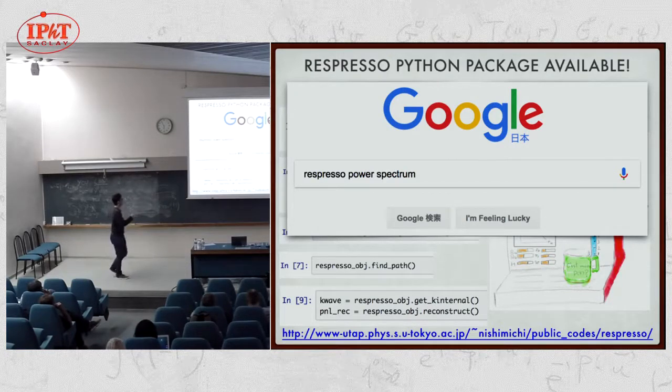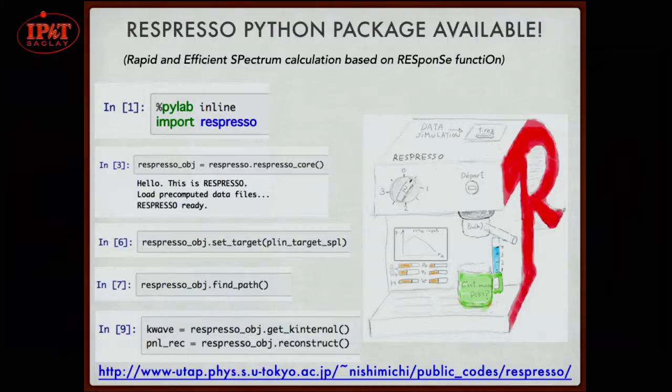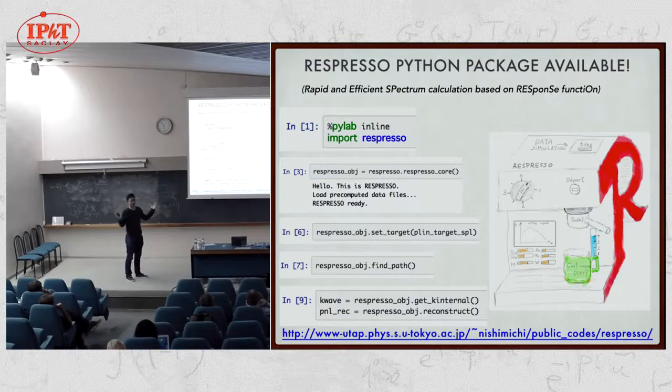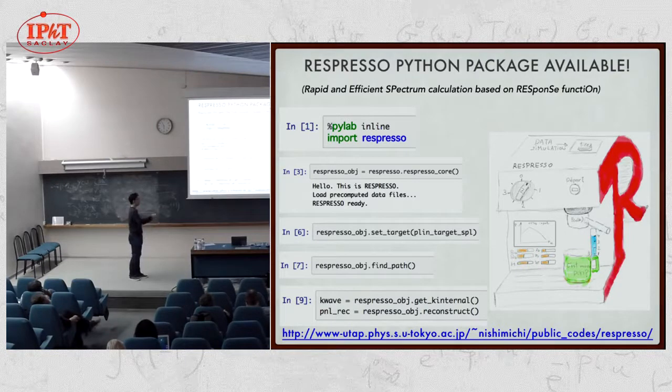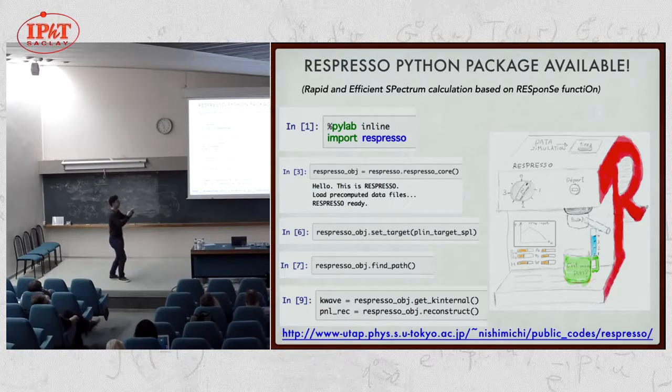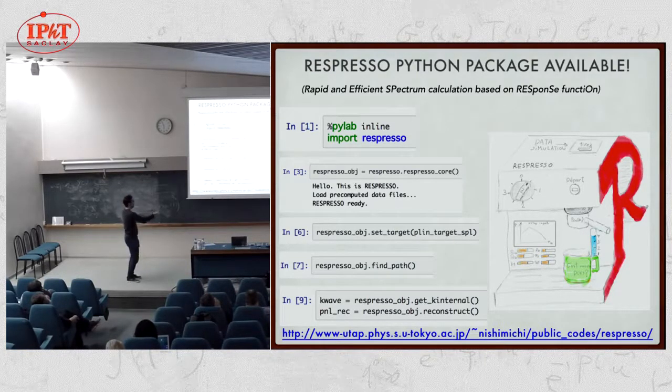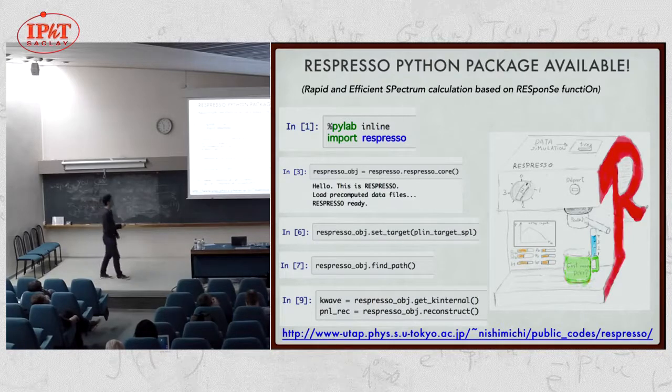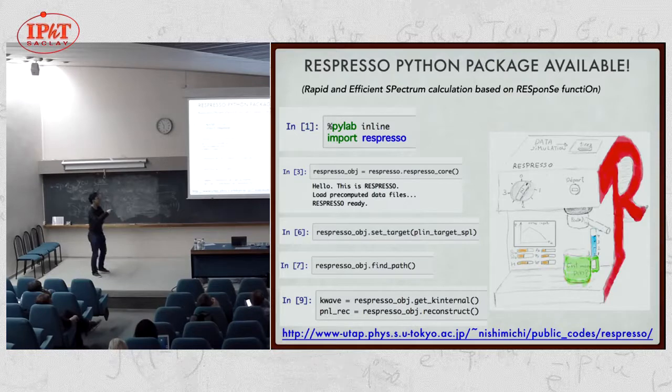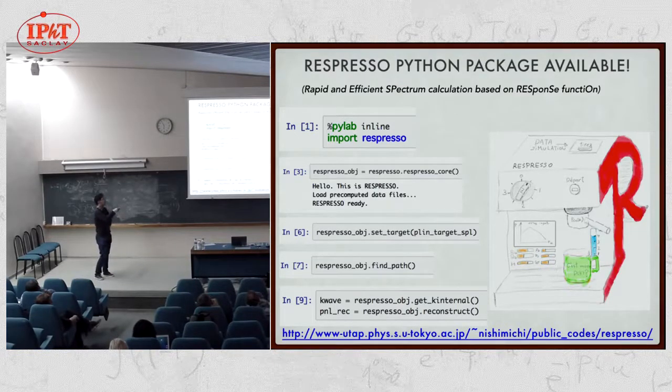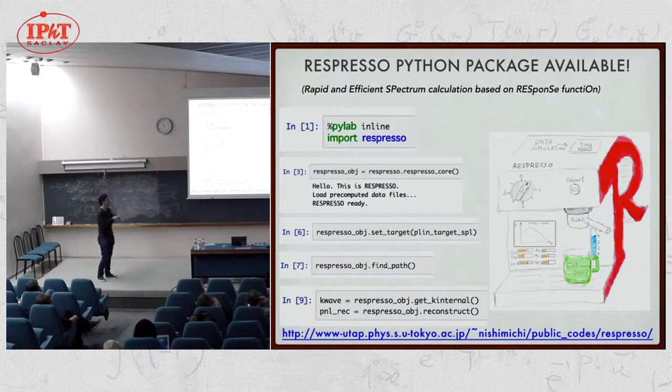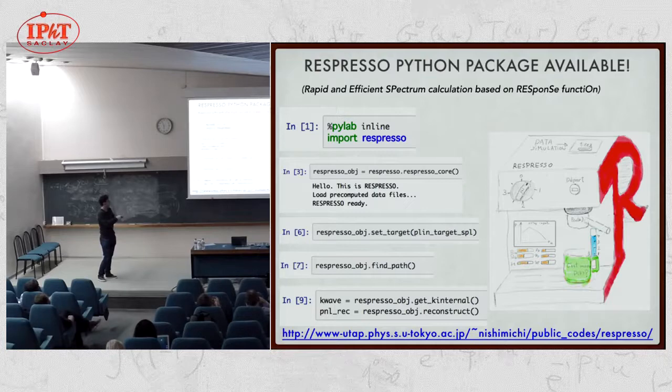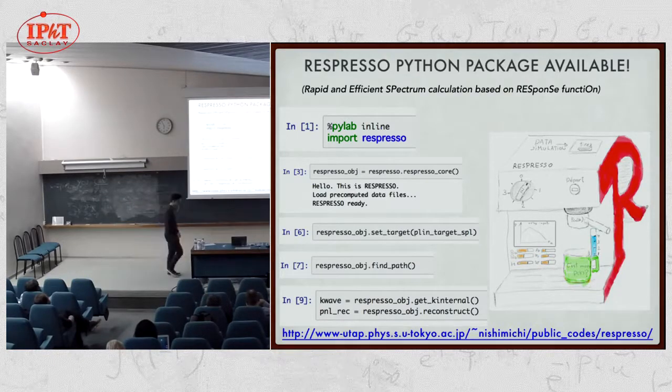This package is publicly available. You can Google it. We call it response-based something. I forgot the name. It's quick. The response function as well as the nonlinear power spectrum template for the Planck cosmology is already set to this package. What you need is just to bring your own linear power spectrum in a capsule to put here. Push the button. It gives you the nonlinear power spectrum of your model. If you know Python or notebook, it's very easy to use. Just import our module and define your object. All you need is to give it your linear power spectrum here. Then it can compute the path for the reconstruction. Finally, it gives you the nonlinear power spectrum.